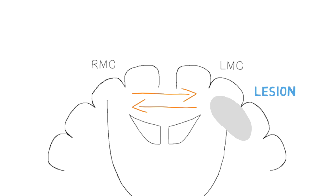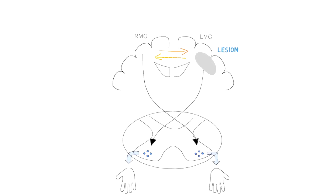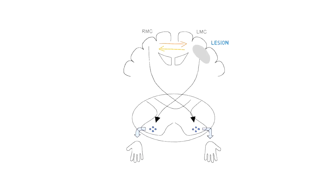Immaturity in typical development or early brain injury might affect this inhibition from the lesion side to the healthier side. This results in both motor cortices becoming active while the motor command only originates from the healthier side. This serves as the second mechanism underlying mirror movements.